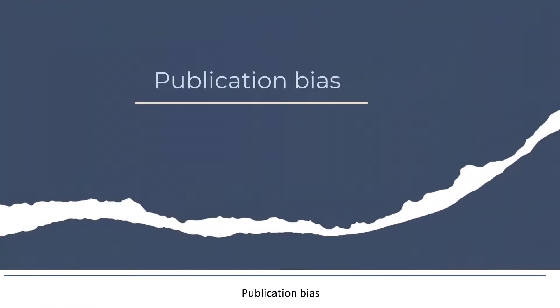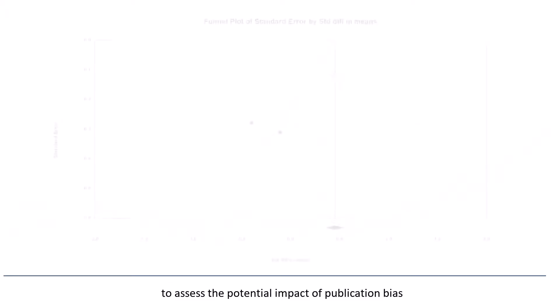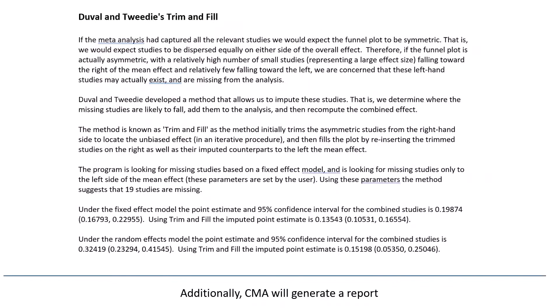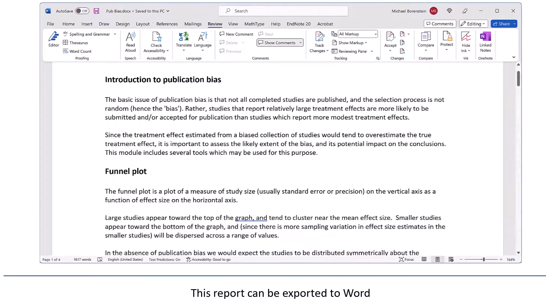Publication bias. The program includes an array of analyses to assess the potential impact of publication bias. One of these is the trim and fill procedure, which is shown here. Additionally, CMA will generate a report that explains how to interpret all of these procedures. This report can be exported to Word, where it can be translated into other languages.